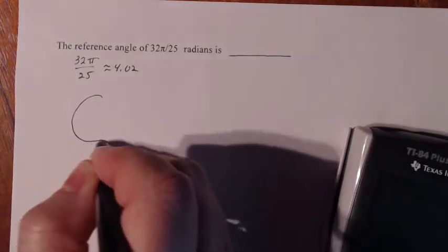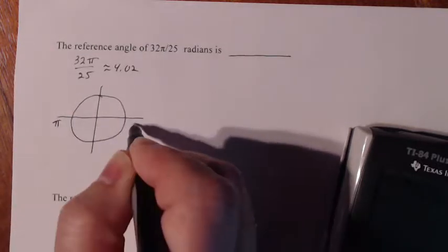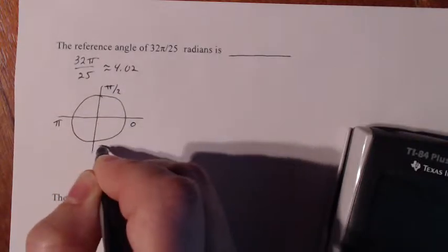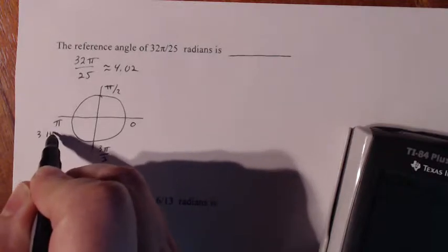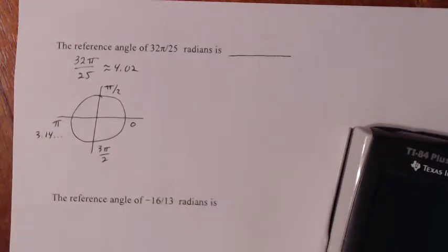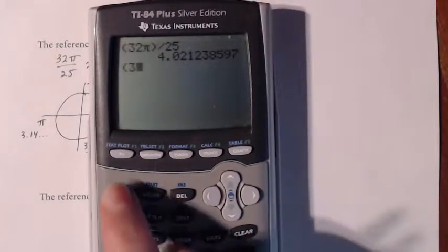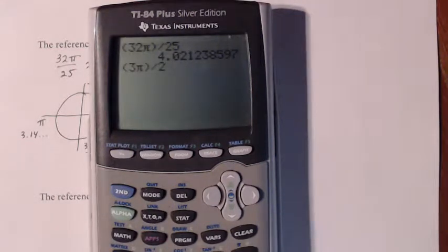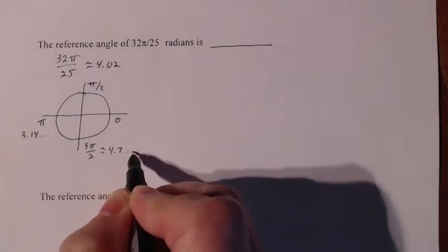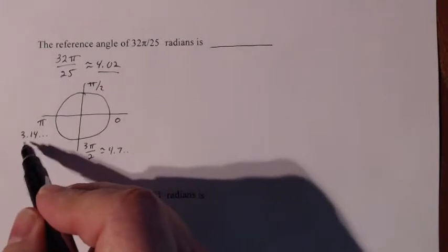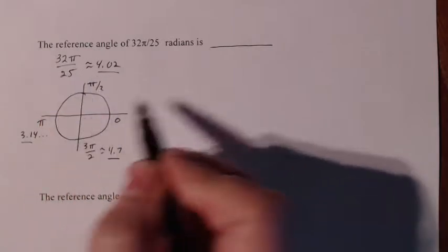On the unit circle, the circle is divided up into four quadrants. We have π, zero, π over 2, and 3π over 2. I know that π is about 3.14, and 3π over 2 gives me about 4.7. So I can see that 4.02 is between 3.14 and 4.7, which means that this angle lies in quadrant three.